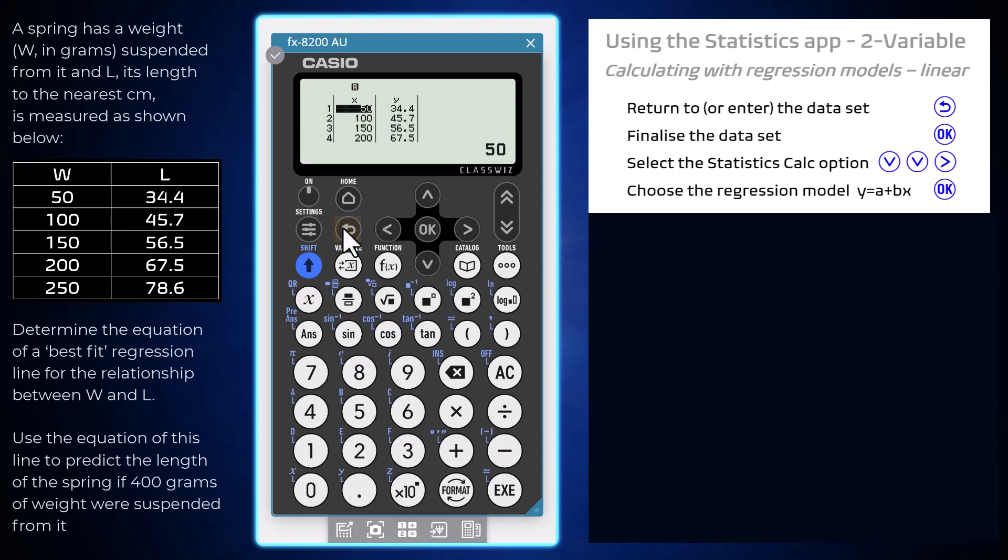I will then press OK or execute to access the statistics calc option, arrow down twice and then right. As the model we require is the first one highlighted, the linear regression model y equals a plus bx, we can choose it by pressing OK. At first glance it may appear as if nothing has happened, but the values associated with the chosen regression model have been calculated ready for me to work with them.